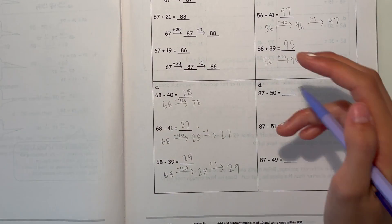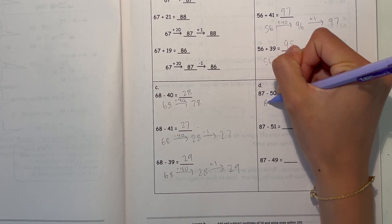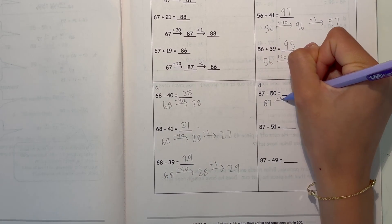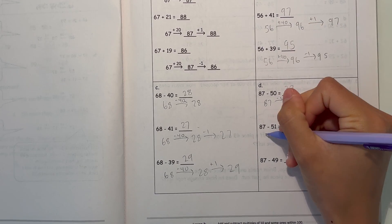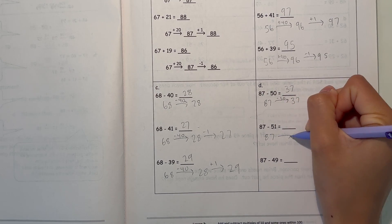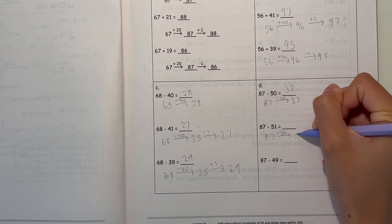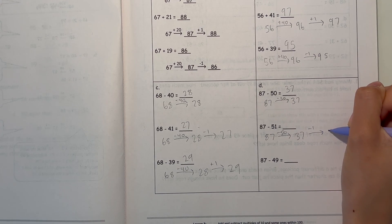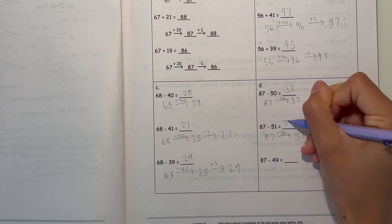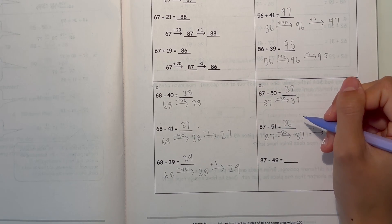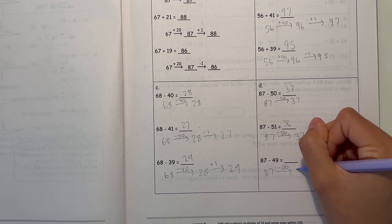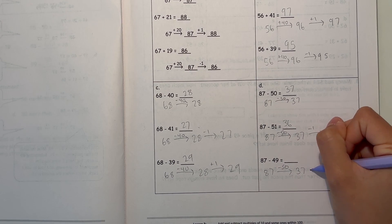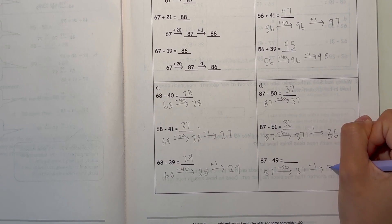Now D. 87 minus 50, that's 37. And now 87 minus 51, so first minus 50, and then minus 1, which is 36. Now 87 minus 49, minus 50 is 37, and then plus 1, that's 38.